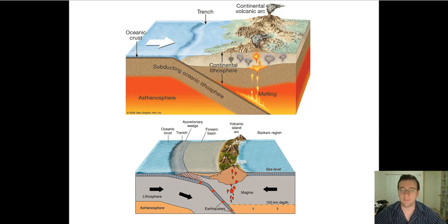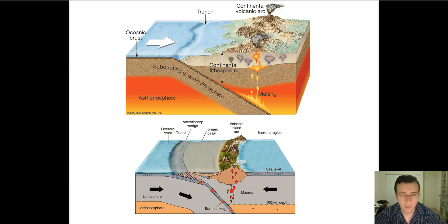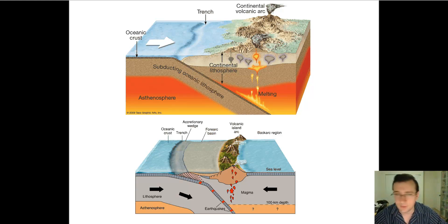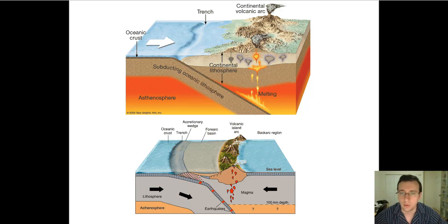Remember there are five features you're going to see a lot: faults, trenches or subduction zones, volcanoes, and earthquakes. Now let's talk about each of these features and each type of collision boundary. There are three types: when oceans hit continents, when oceans hit other oceans, and when continents hit continents — which is not in this slide, we'll see it in the next one.